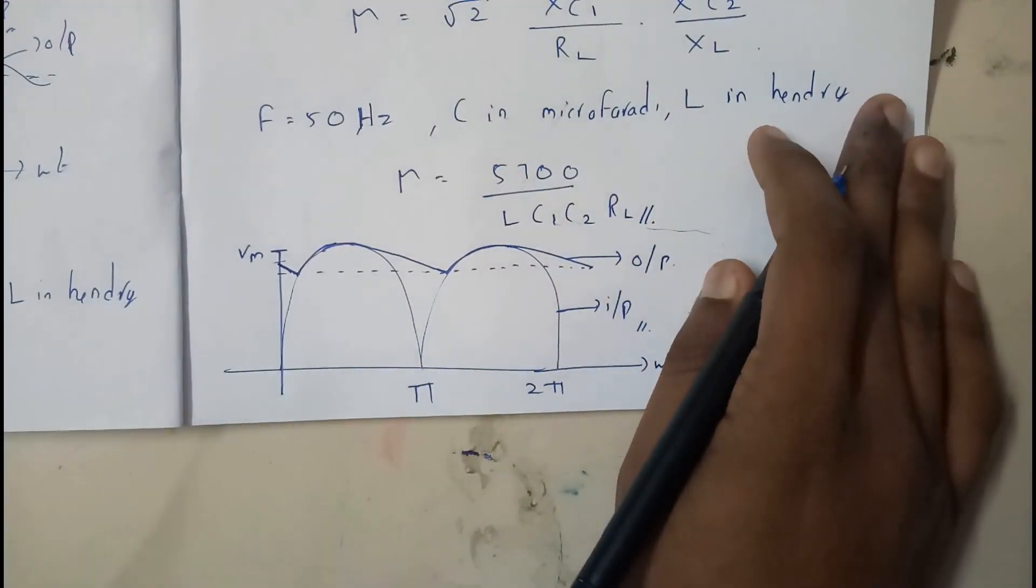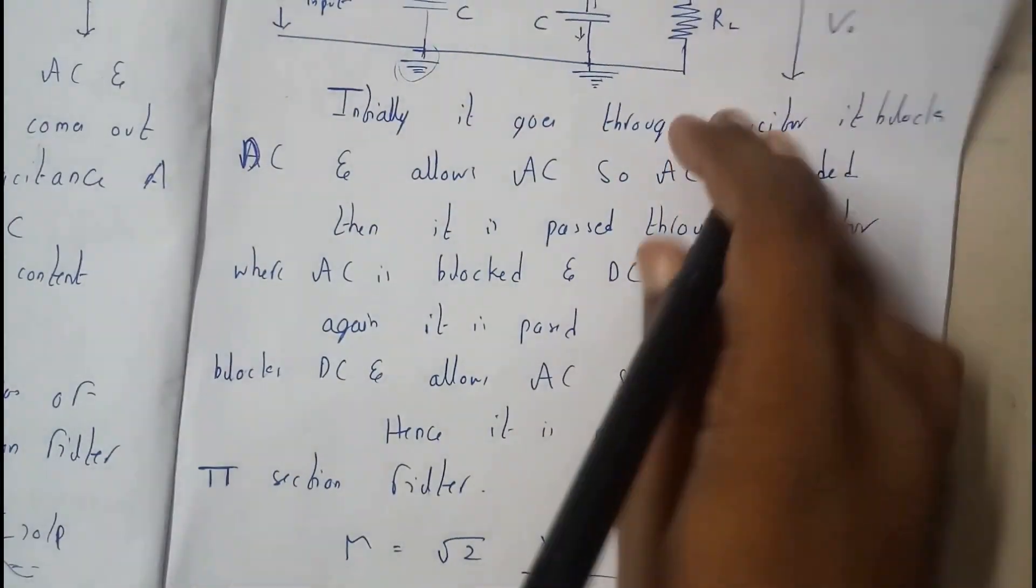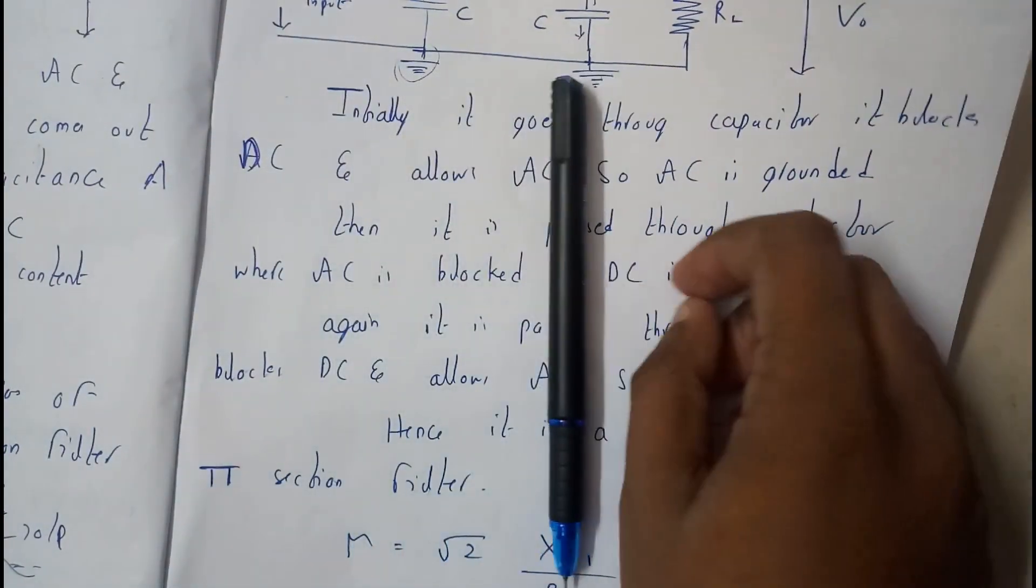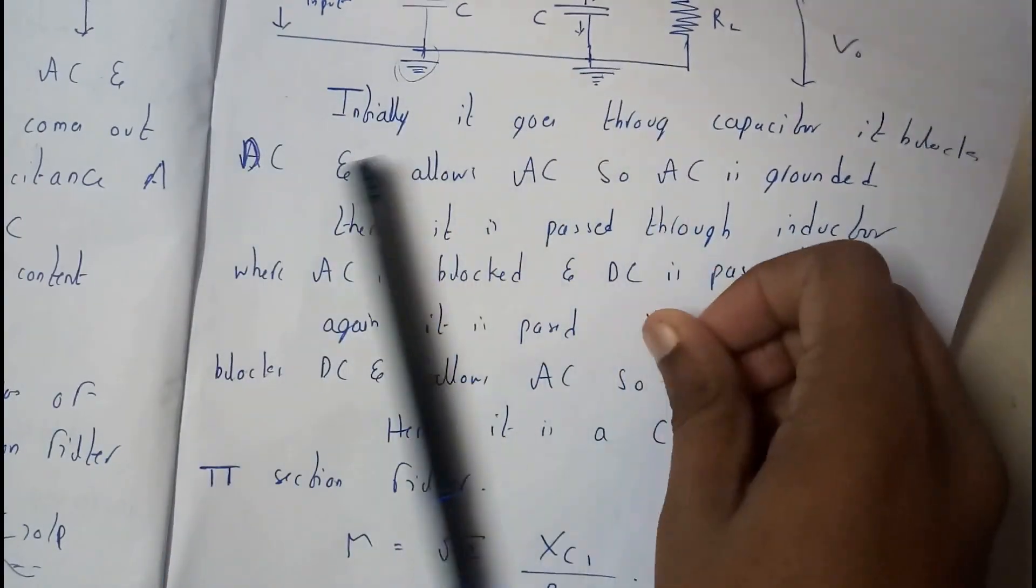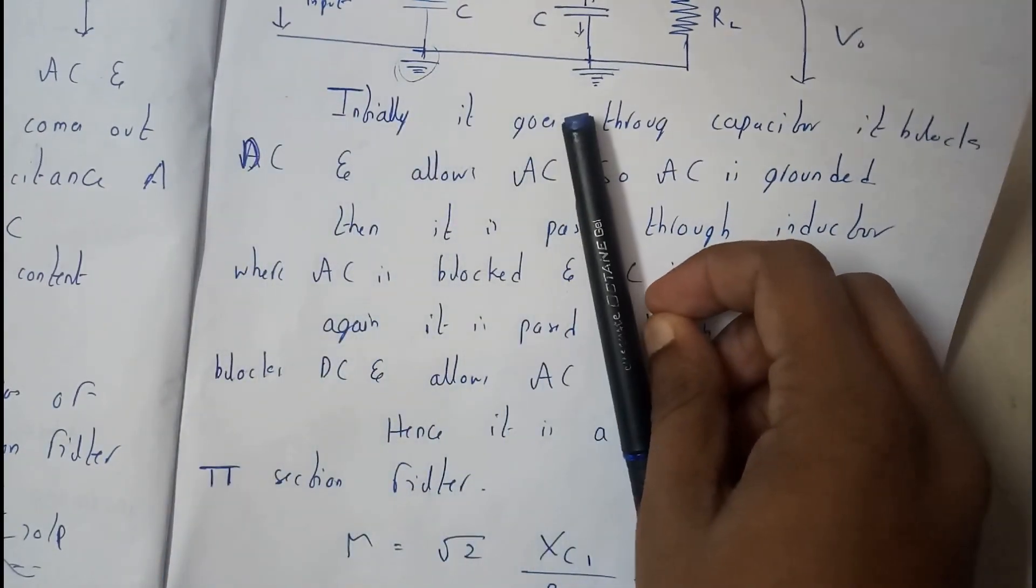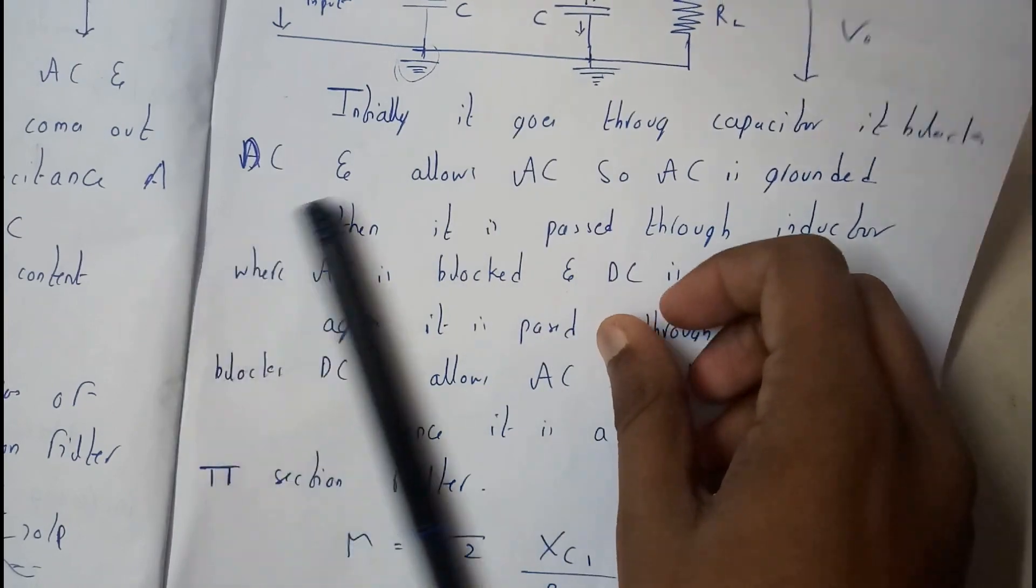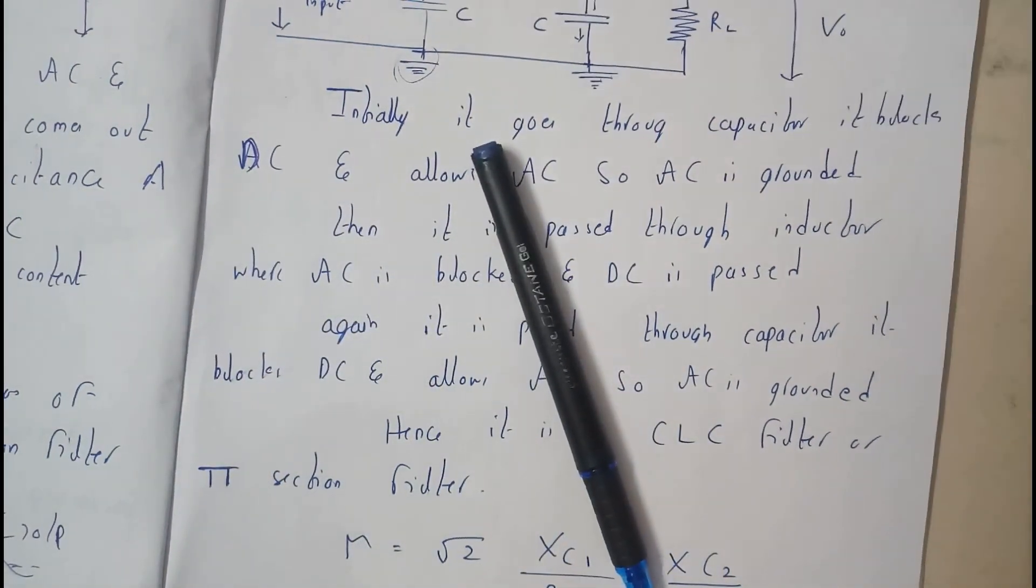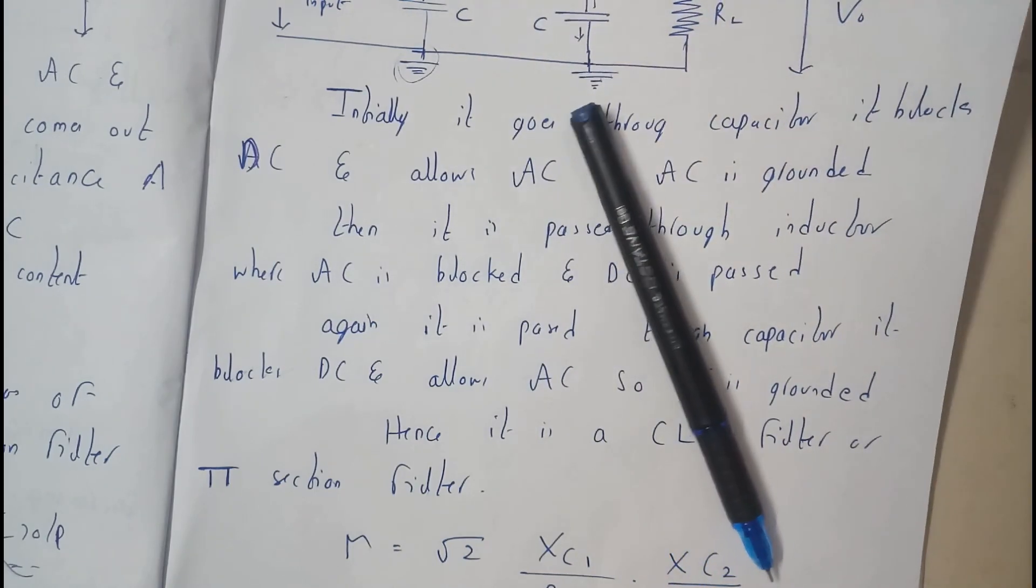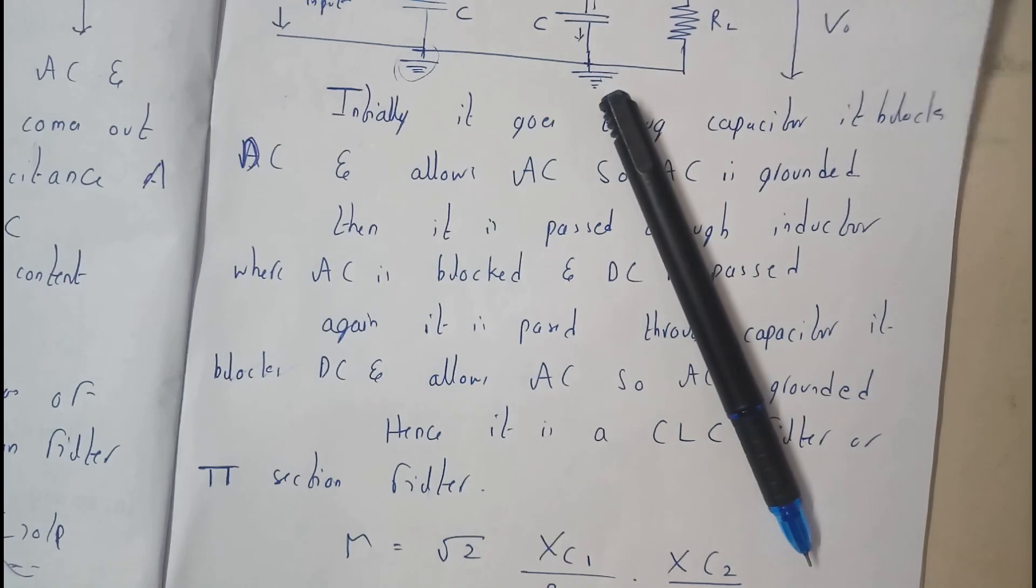I hope everyone got a small idea on all these types of filters. If you ask which could be the best filter, from the diagram you can say that CLC filter is the best filter, as it has three stages: the first capacitor, middle inductor, and again capacitor.